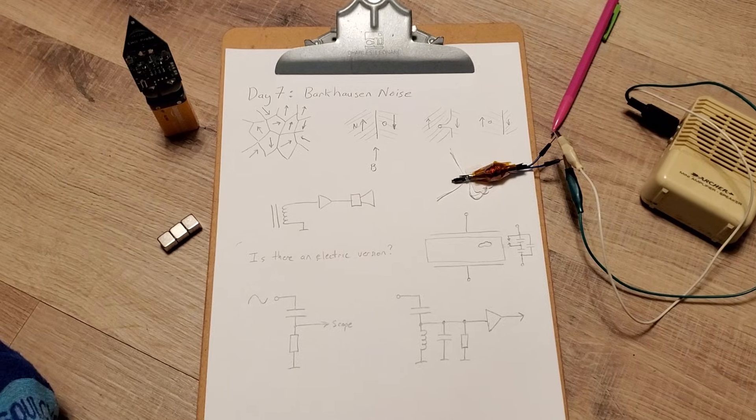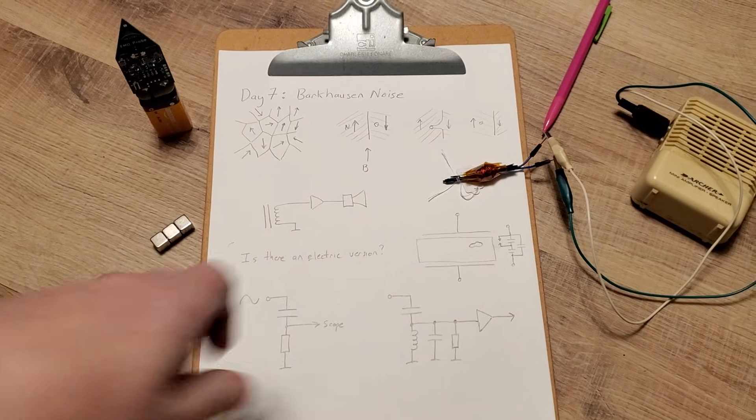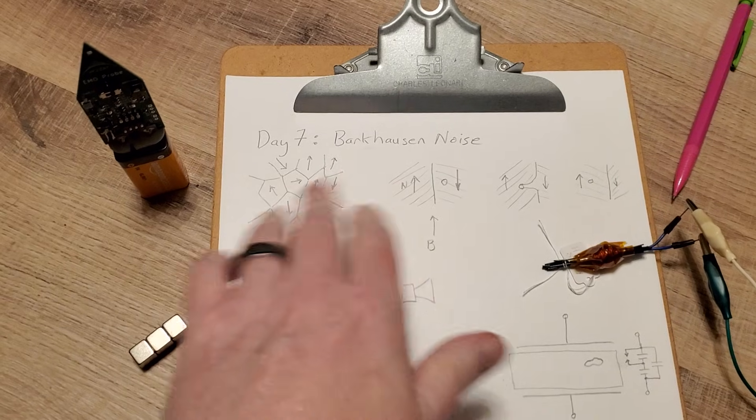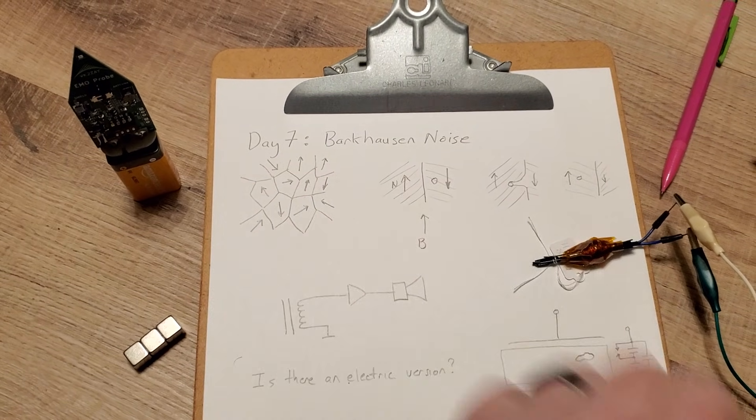There's a couple of different ways it can actually happen, but the way that you normally see described is magnetic materials are made out of a bunch of domains that are randomly oriented until the external field starts to align them.